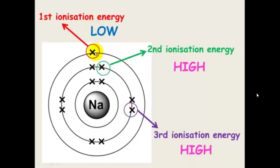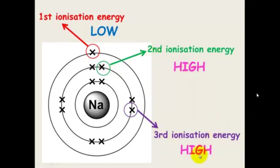That first electron wants to go, to give sodium the full outside shell, which means it has low ionisation energy. But to remove a second or third electron is going to require lots of energy, so it is said to have a high ionisation energy.